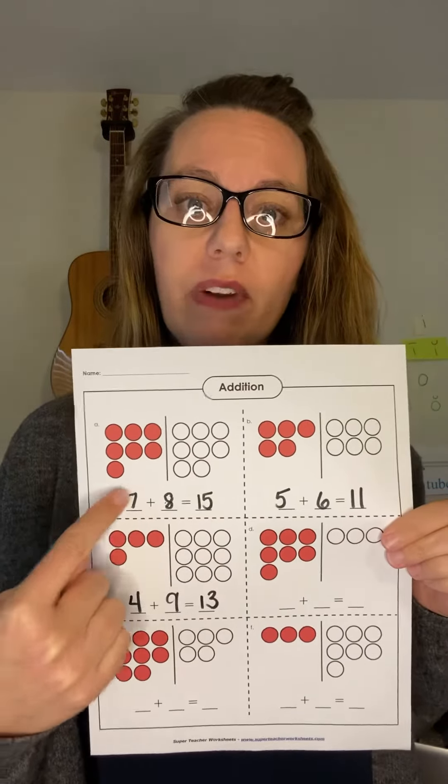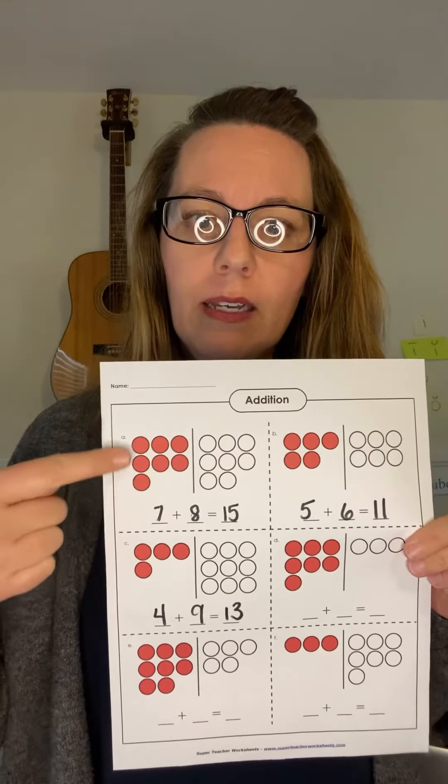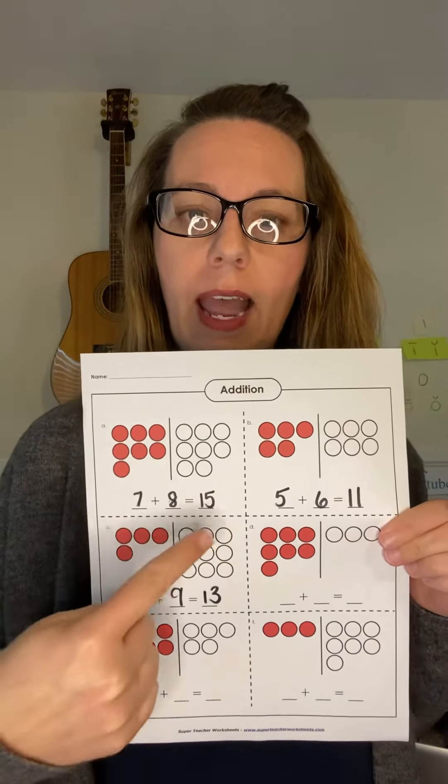But basically, we are just going to write number sentences and they're all addition sentences. So we're doing red counters, white counters, and then what they equal.